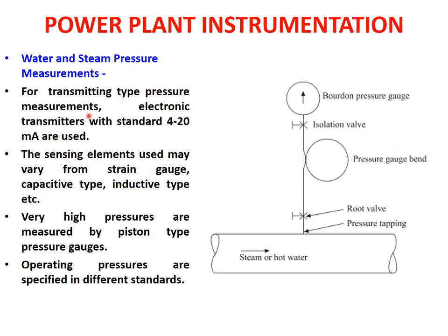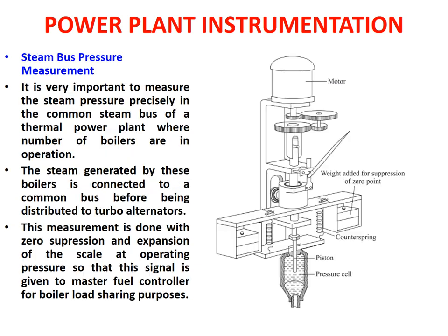For transmitting-type pressure measurements, electronic transmitters with a standard 4 to 20 milliampere output are used. The sensing elements may vary — strain gauge, capacitive type, or inductive type, etc. Very high pressures are measured by piston-type pressure gauges. Operating pressures are specified in different standards.